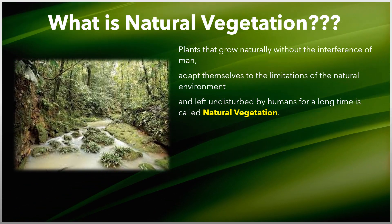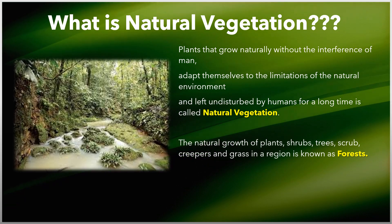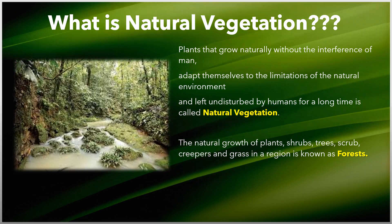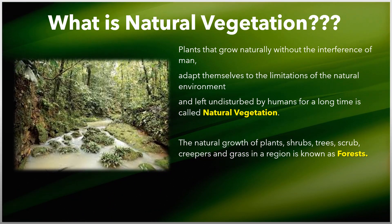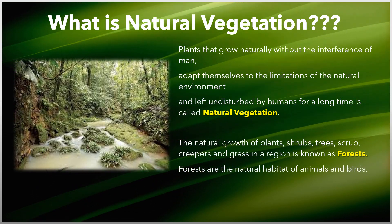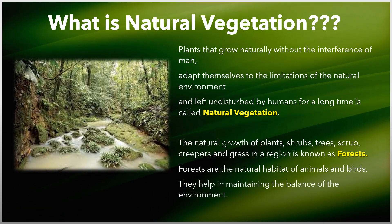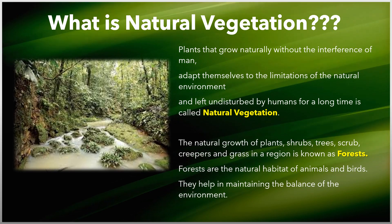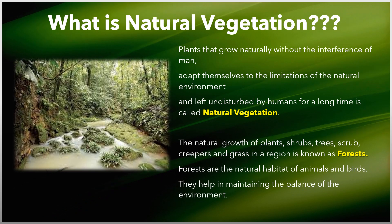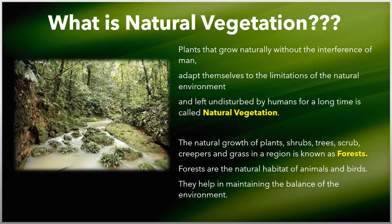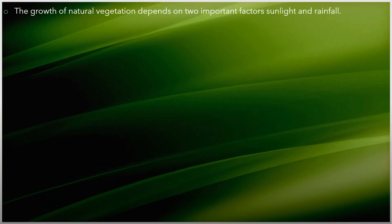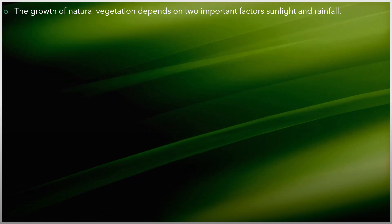Let's understand what a forest is. The natural growth of plants, shrubs, trees, scrub, creepers, and grass in a region is known as forests. Forests are the natural habitat of animals and birds and help in maintaining the balance of the environment. Now that we know what natural vegetation is, we can better understand this lesson. The growth of natural vegetation depends on two important factors: sunlight and rainfall.